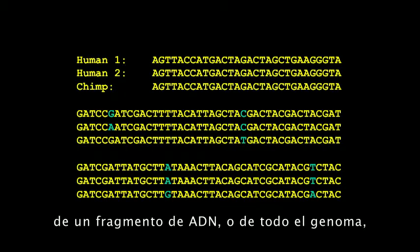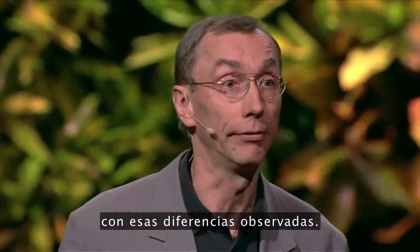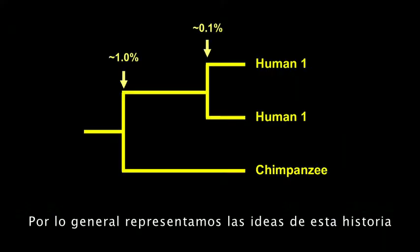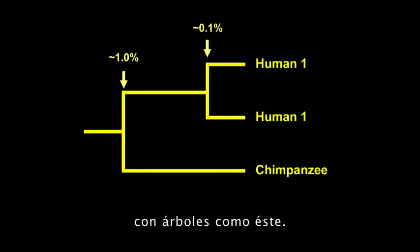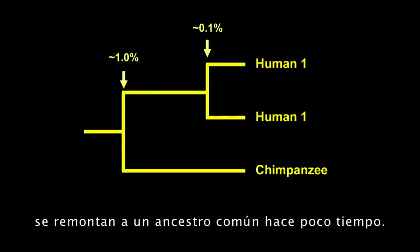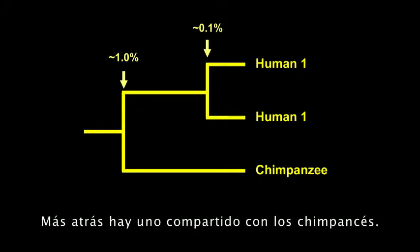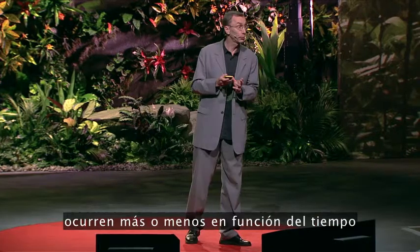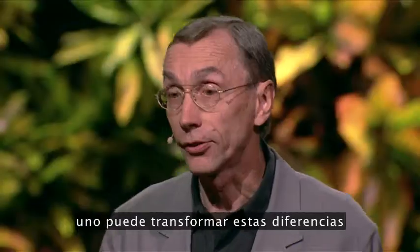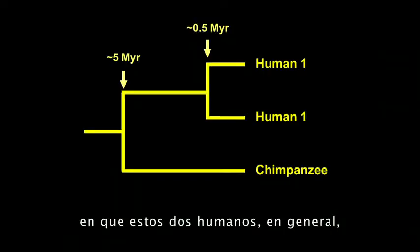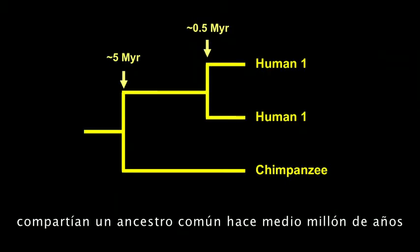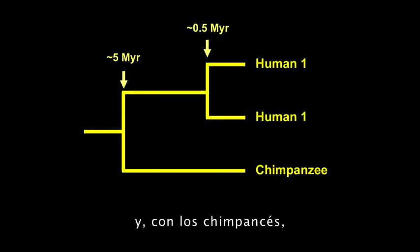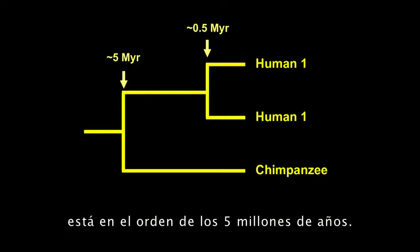And if you are interested in the history of a piece of DNA or the whole genome, you can reconstruct the history of the DNA with those differences you observe. Generally, we depict our ideas about this history in the form of trees like this. In this case, it's very simple. The two human DNA sequences go back to a common ancestor quite recently, further back is the one shared with the chimpanzees. Because these mutations happen approximately as a function of time, you can transform these differences to estimates of time — the two humans typically share a common ancestor about half a million years ago, and with the chimpanzees it will be in the order of five million years ago.